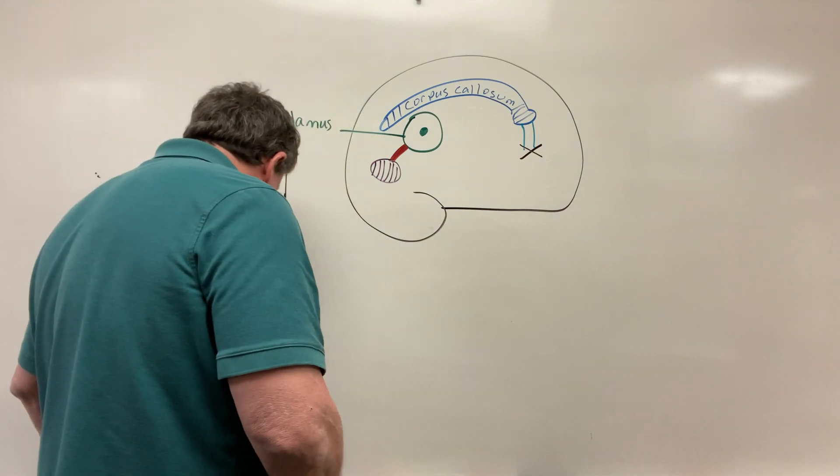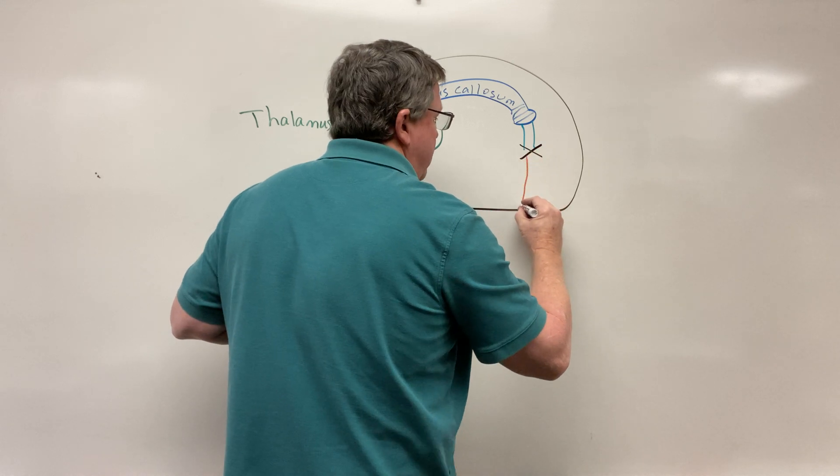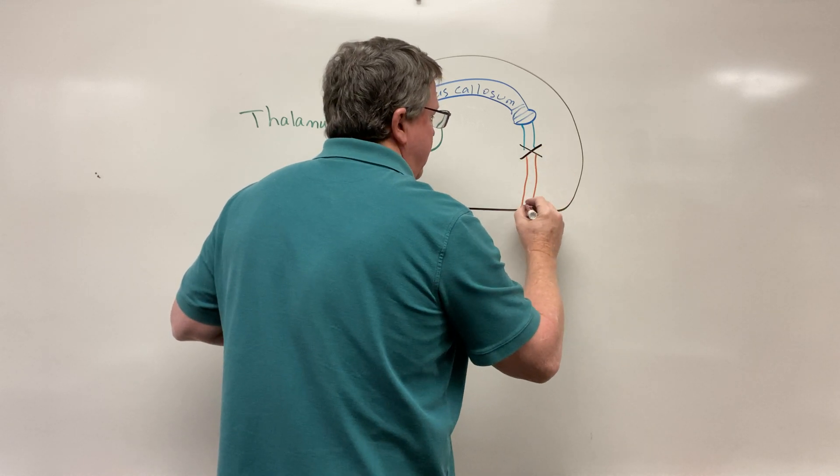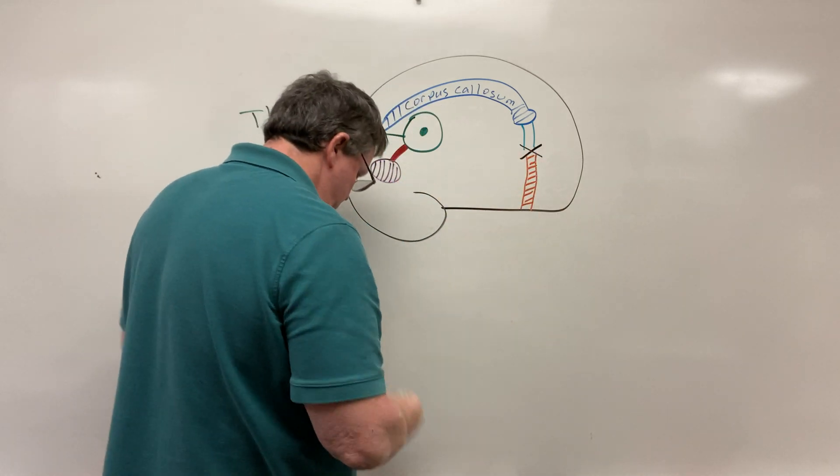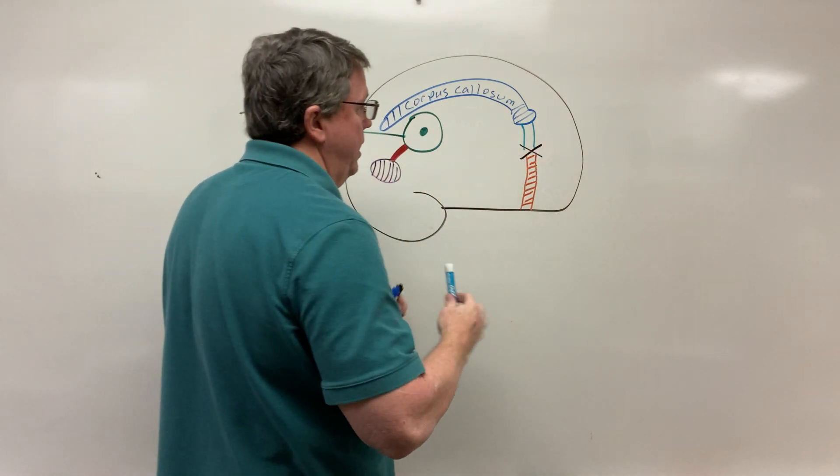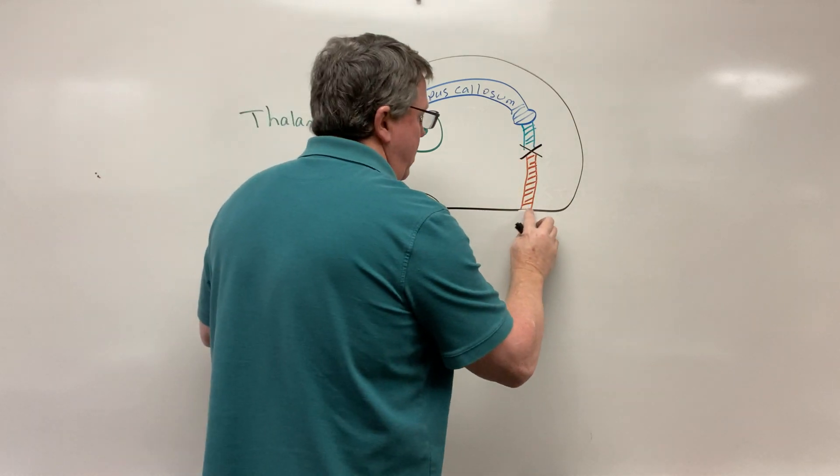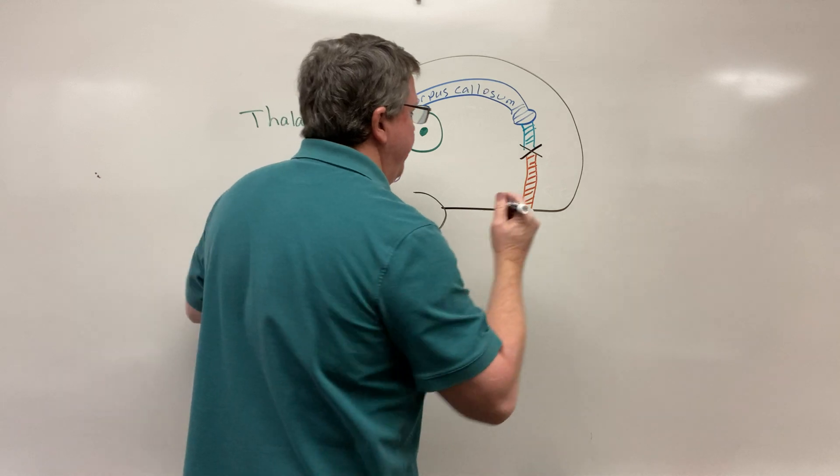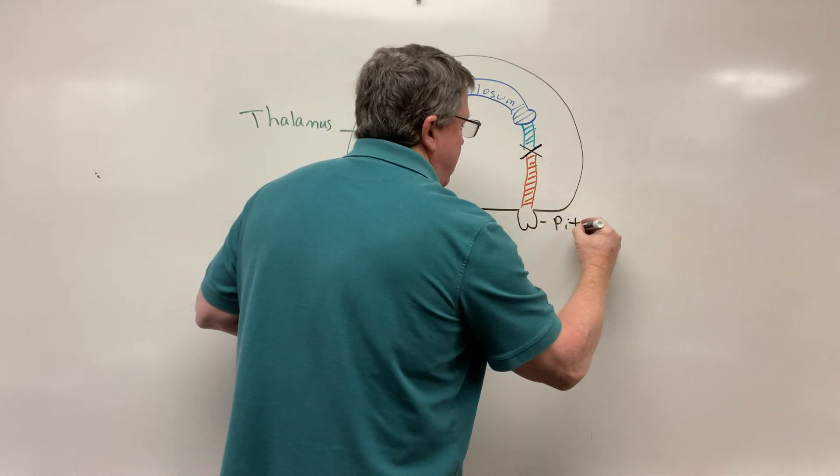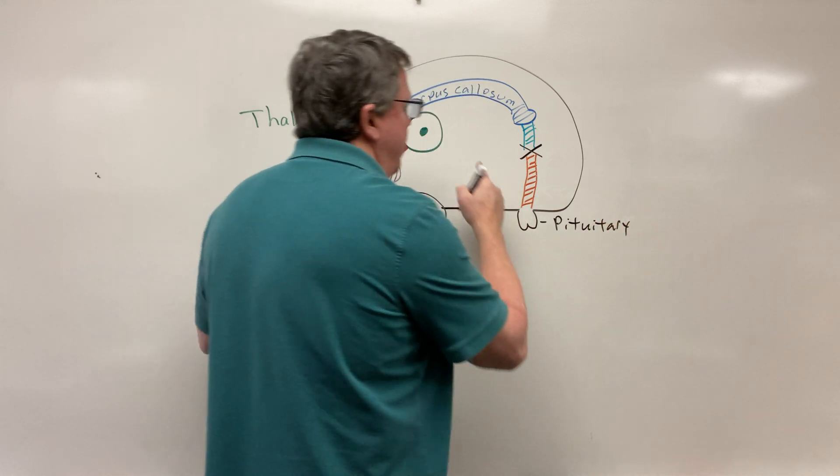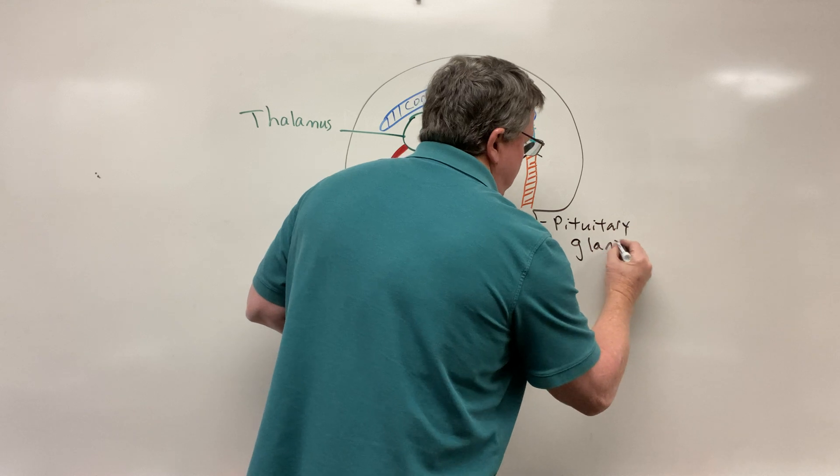And then from there, we can come down and it extends down to this area. What's down here is your pituitary gland. The pituitary gland releases several hormones. I'm going to make a video on the hypothalamus and we'll talk about that then. So here's my pituitary gland.